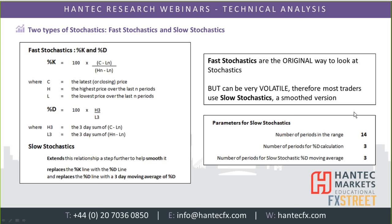That's your stochastics on Sterling Dollar. You've got your main line, which is the solid line, and then that is lagged by the signal line. As I said, it's effectively a three-day moving average, which you can see lags and smooths out the main line. The signals often come when you get crossovers of those lines and changes in direction.